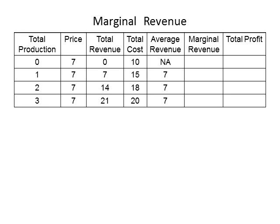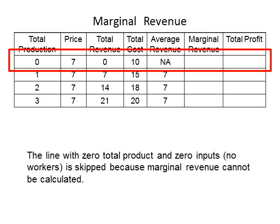Let's look at the process of calculating marginal revenue using the first four rows of numbers, starting with the line where production is zero. The marginal revenue cannot be calculated for the first row because it is necessary to have two levels of total production and two levels of total revenue. Since there is only one available at total production of zero, we cannot calculate the marginal revenue. As a result, enter NA or a dash in the first row for marginal revenue.